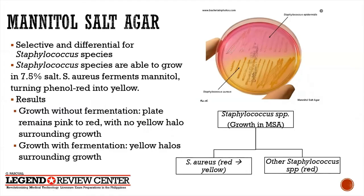Mannitol Salt Agar is selective because it contains 7.5% salt — Staphylococcus species are able to grow in 7.5% salt. It is differential because it tests for mannitol fermentation. If the organism ferments mannitol, the products of fermentation turn the phenol red indicator yellow. As seen in the diagram, Staph aureus will ferment mannitol, converting the phenol red to yellow.